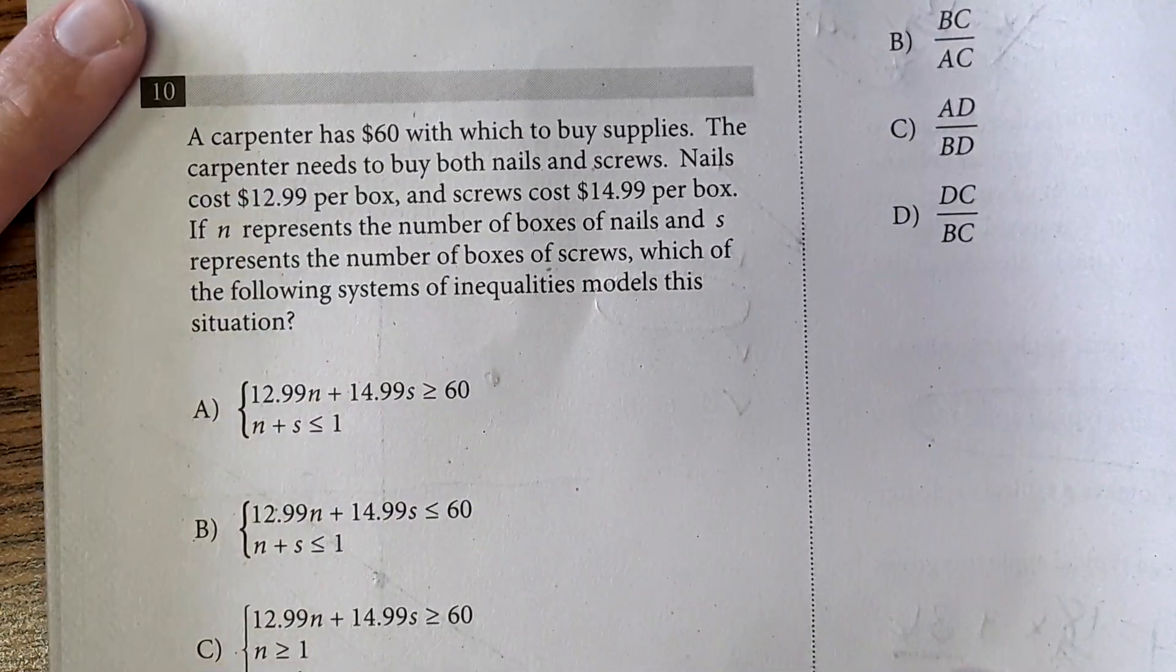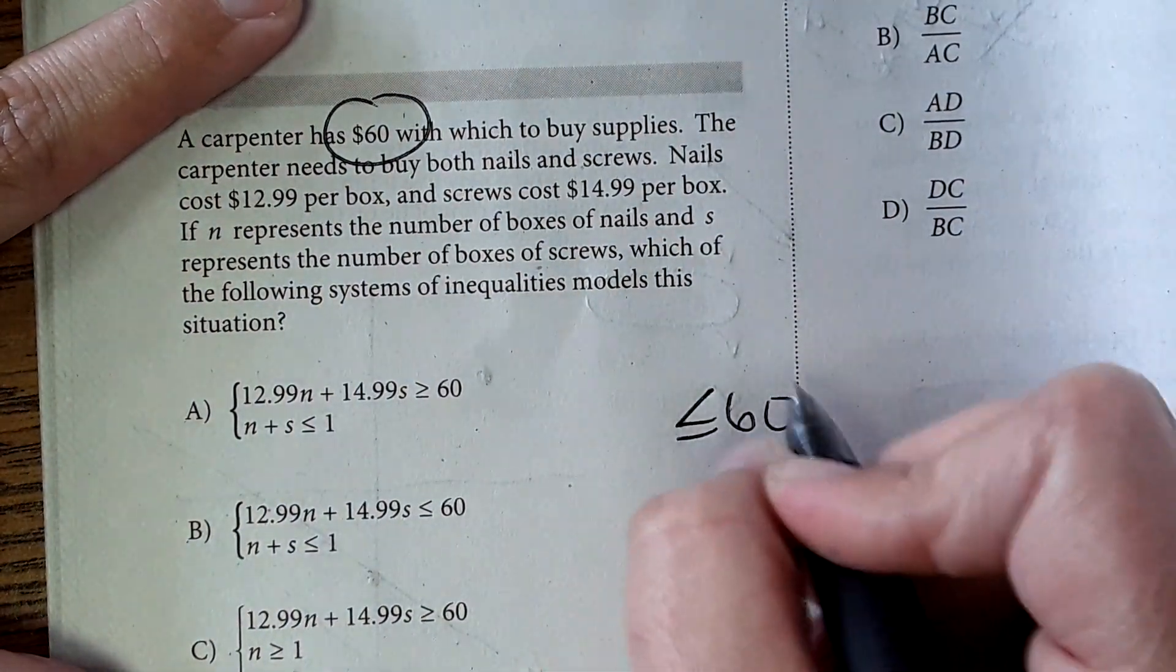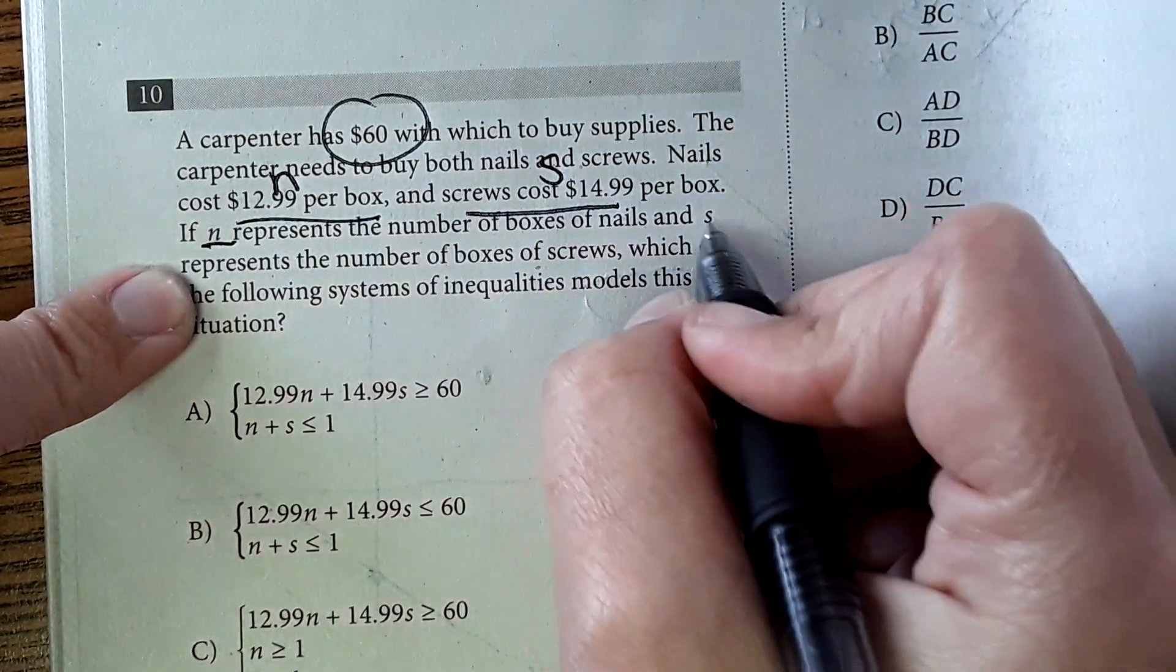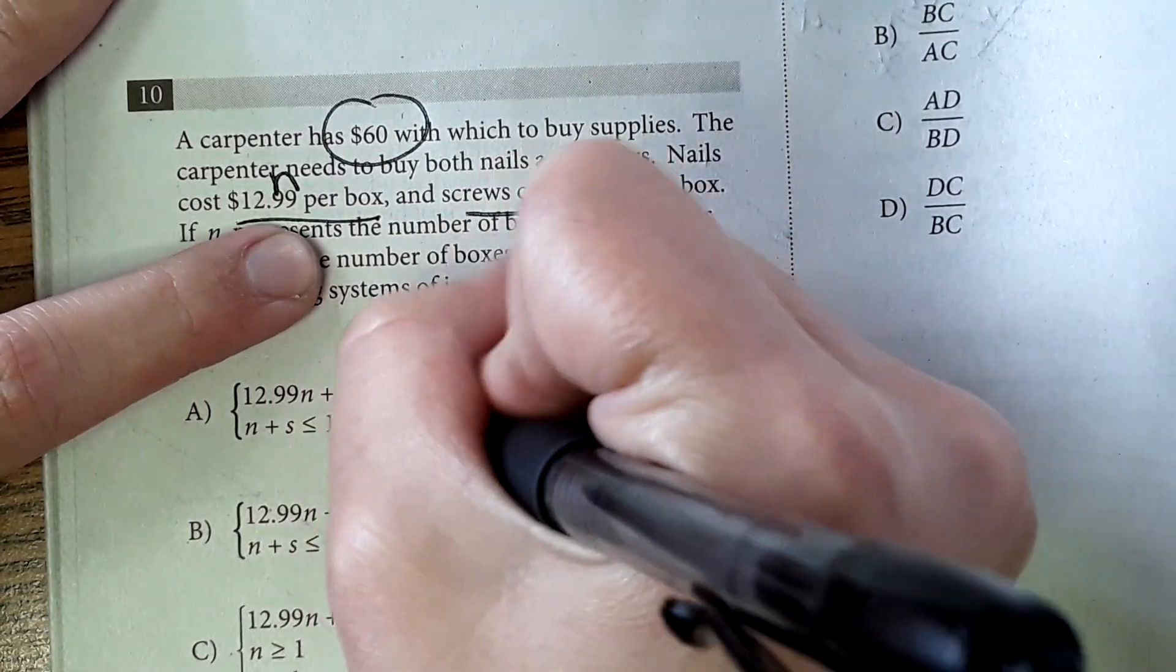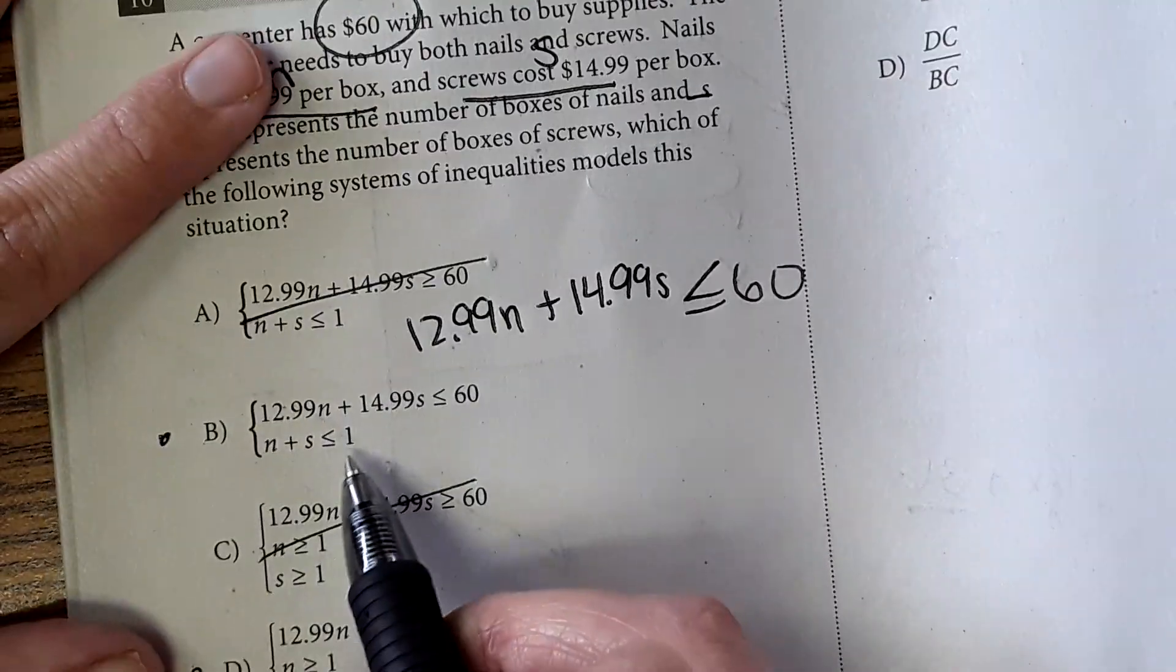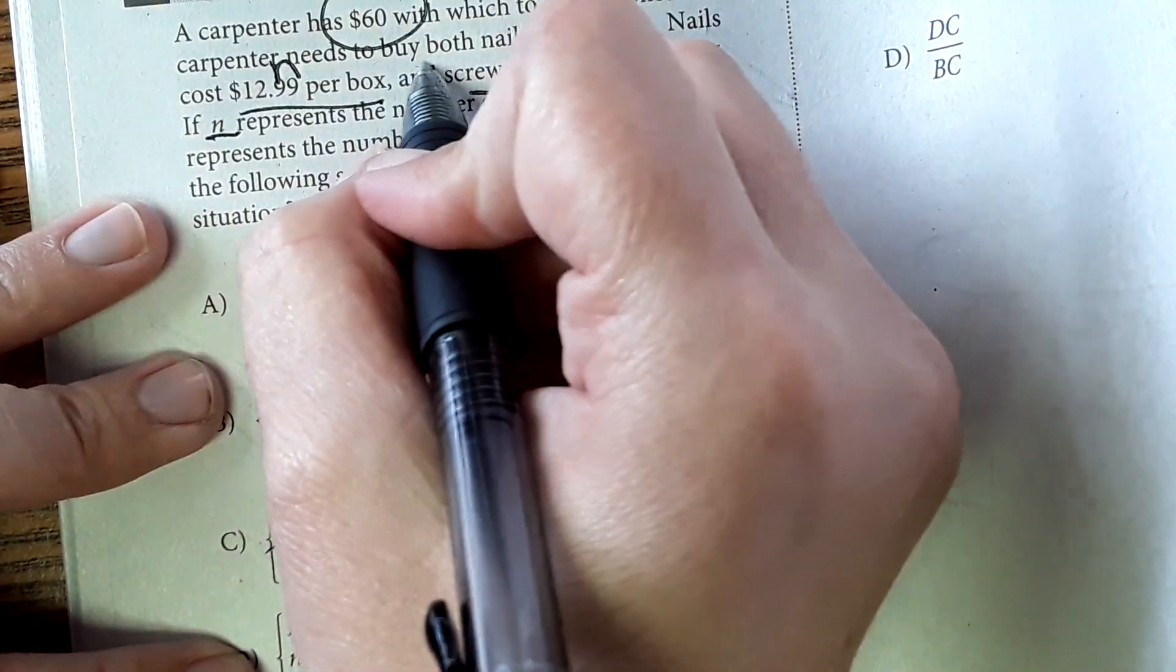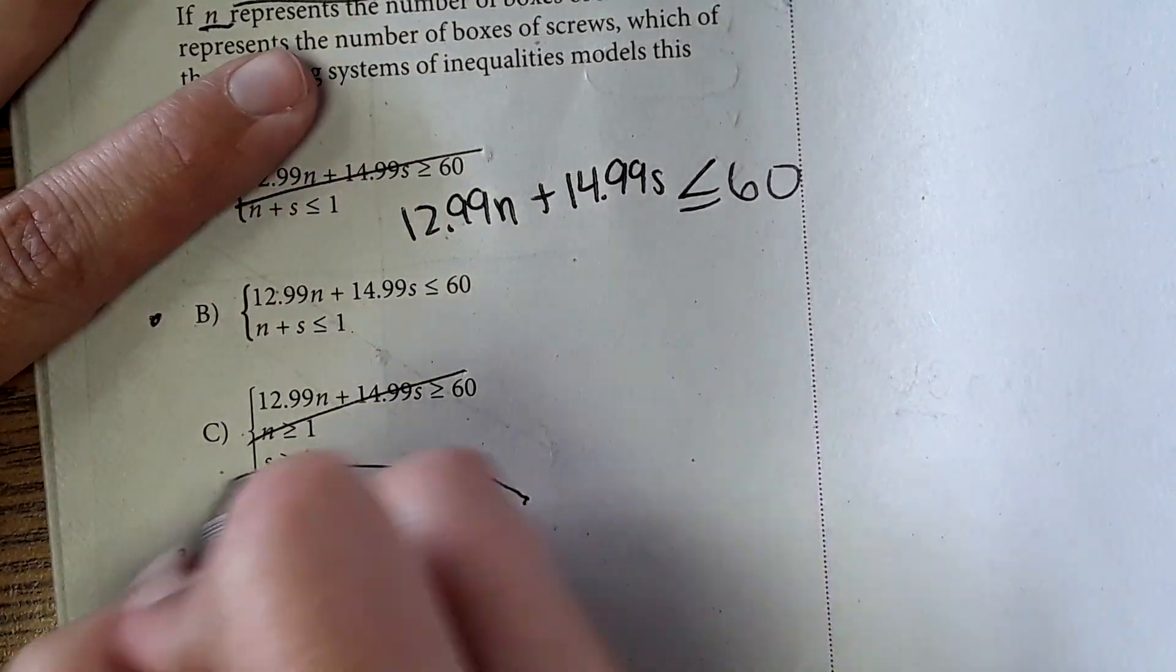Moving on to number 10. A carpenter has $60 to work with. So $60, he has to spend less than or equal to that $60. The carpenter needs to buy both nails and screws. Nails cost $12.99 per box, and that is going to be our N. And screws cost $14.99 a box. That's going to be S. And it tells me that right there, N and S. Which of the following systems of inequalities models this situation? So first off, I'm thinking $12.99 per box of nails plus $14.99 for the box of screws. We got this. I look at my answer choices. I can cross these two out. It's between these two. Looking at what else they're looking for, N plus S is less than or equal to 1. Well, they did say something up here that said they have to buy both nails and screws. So by box of nails must have to be greater than or equal to 1, and so would the screws. So the best answer is D.